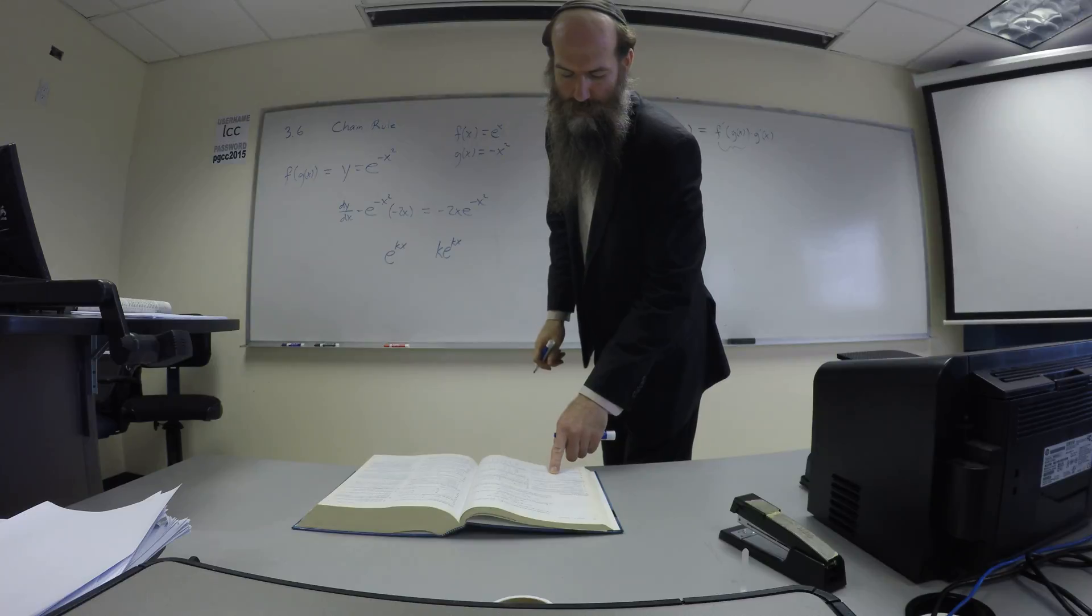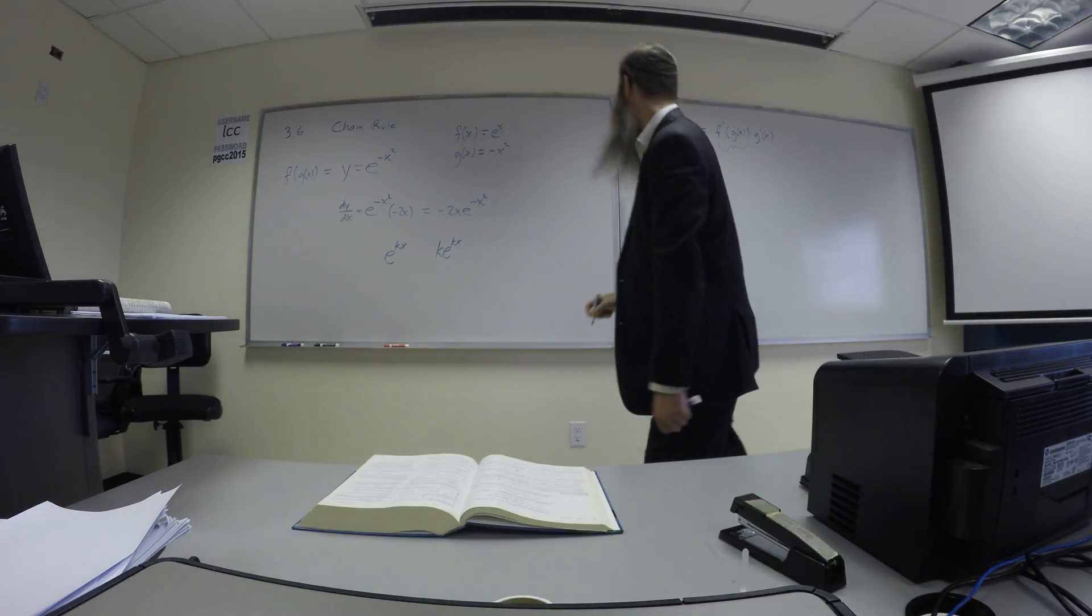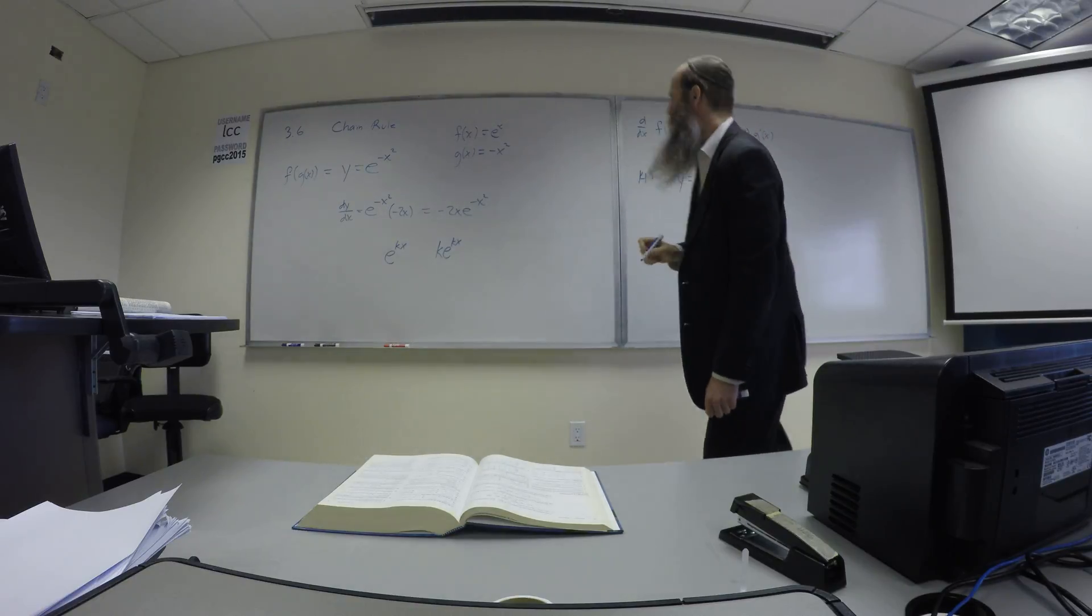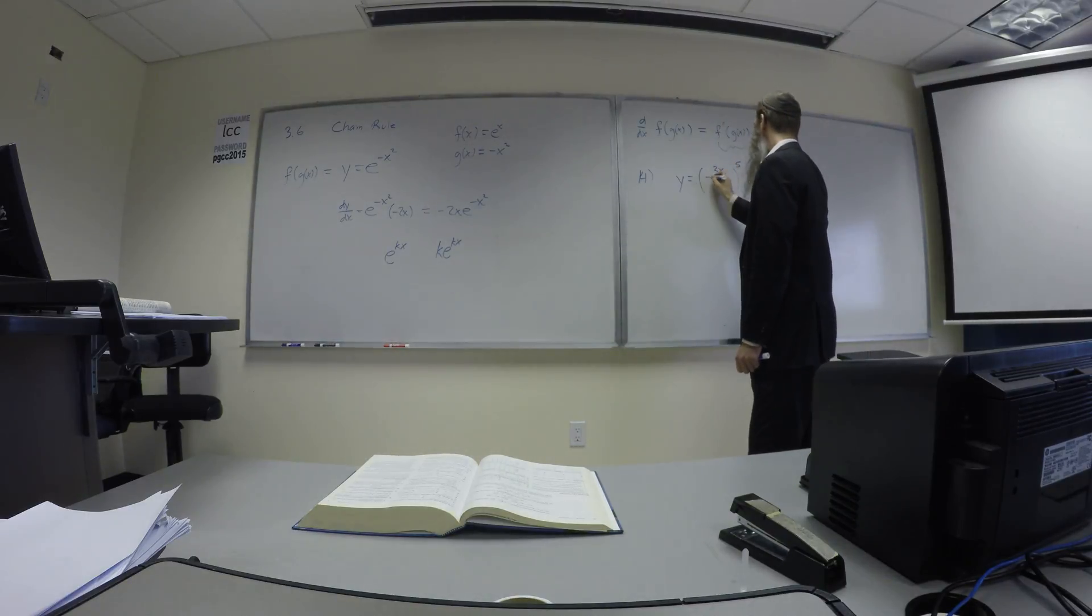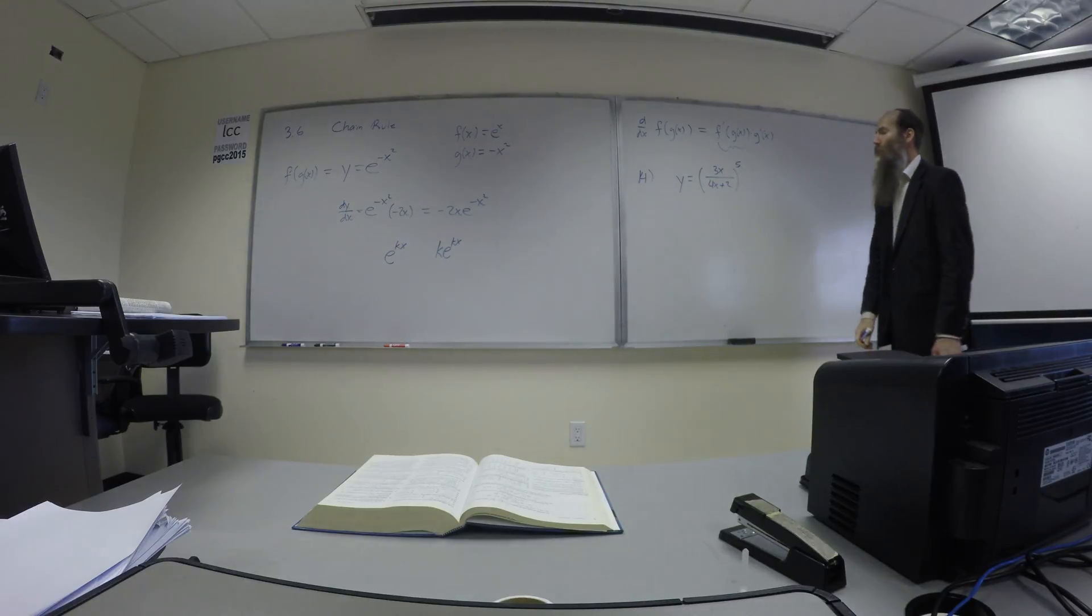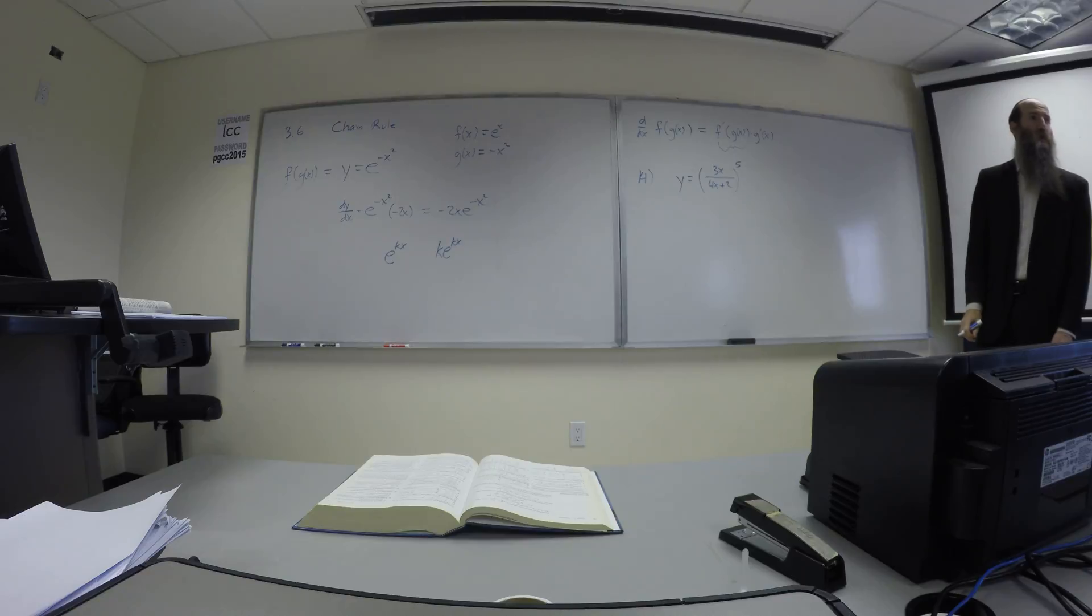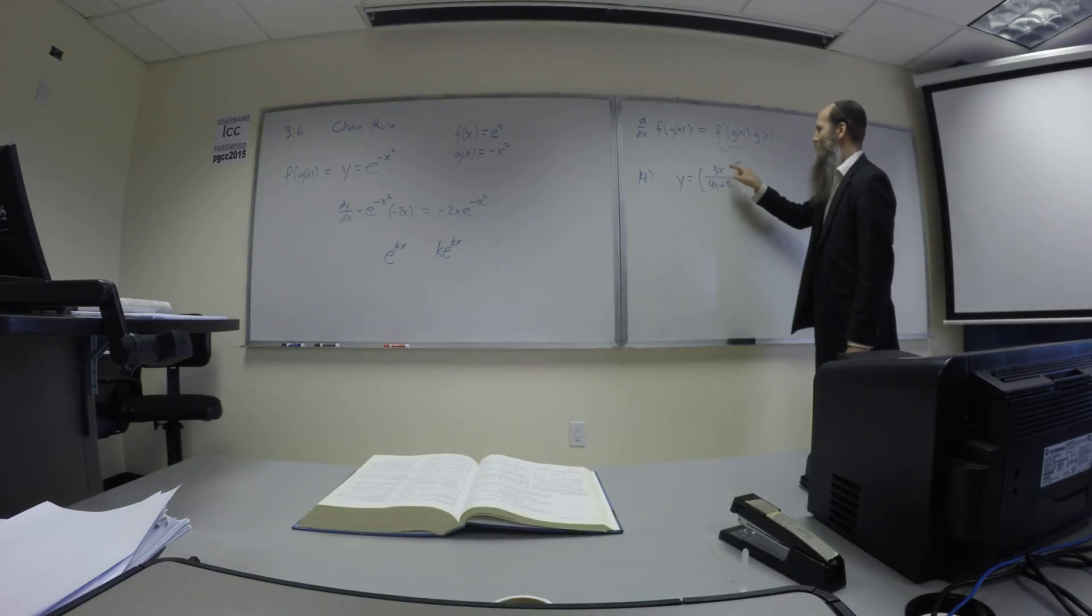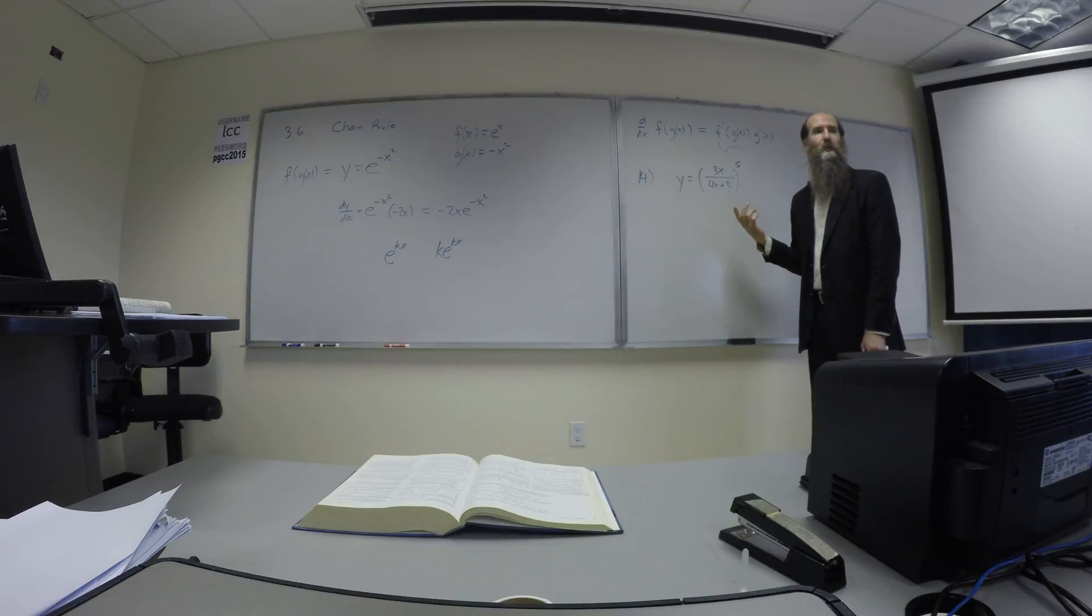We have a rational function inside a power function, 3x over 4x plus 2 to the fifth power. If we were trapped with the rules we had before without the chain rule, God forbid, what you had to do? You had to multiply this thing times itself five times, expand the whole thing out, and then do a monstrous quotient rule on it, right?